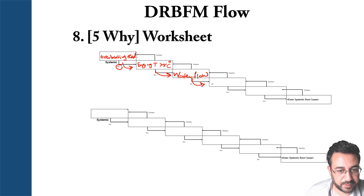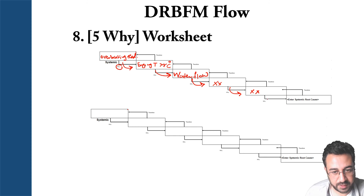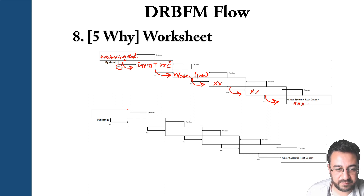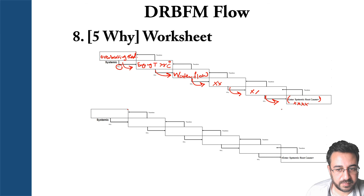Why is the water flow not going as intended through the engine? Because there is a blocked pipe in the cooling system. Why is there a blocked hose? Because there is debris inside the water cooling system. Why is there debris in the cooling system? Because the filter is not working, the system is not well sealed, or the vehicle was being used in conditions not intended. Now you identify the root cause of your problem and take corrective actions.